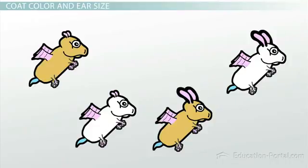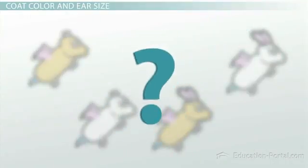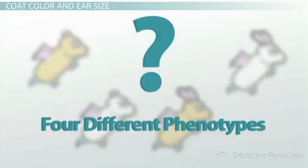However, these results are puzzling, right? I mean, for starters, the cross produced four different phenotypes. The first time we did these sort of studies with coat color, we only got two.